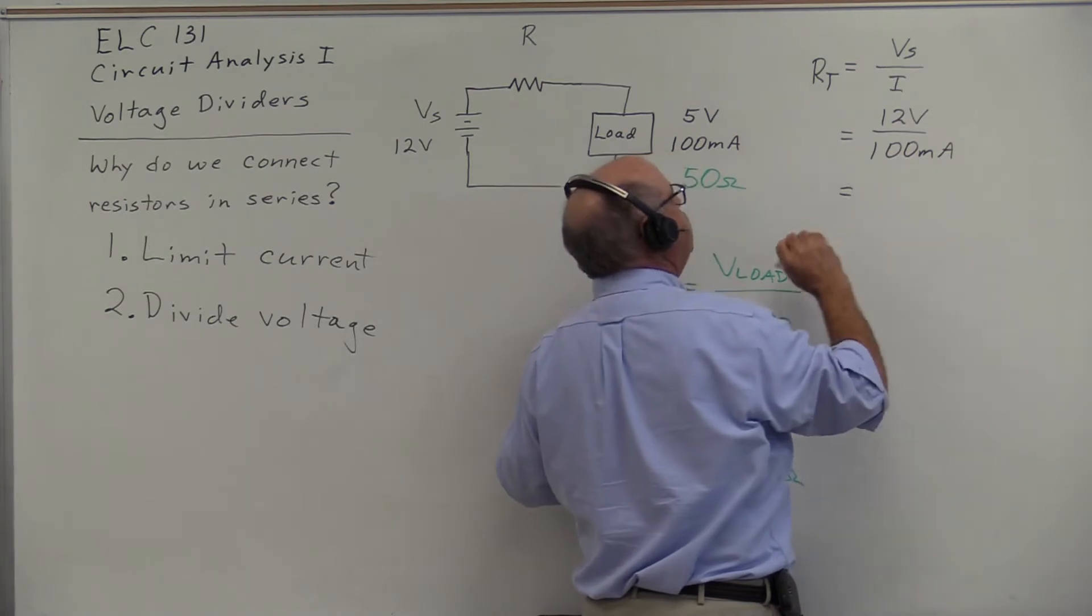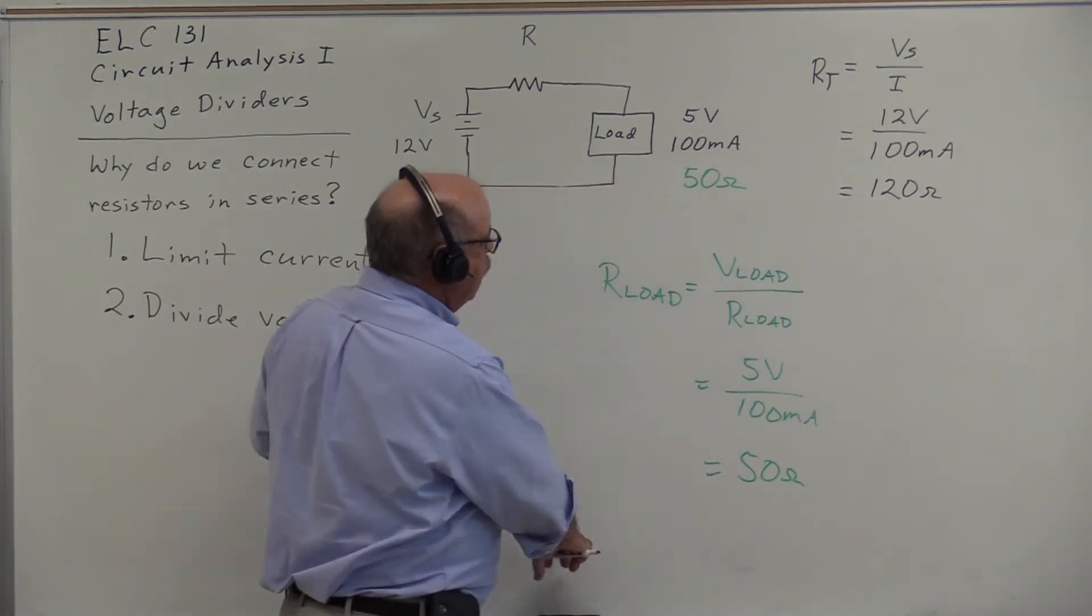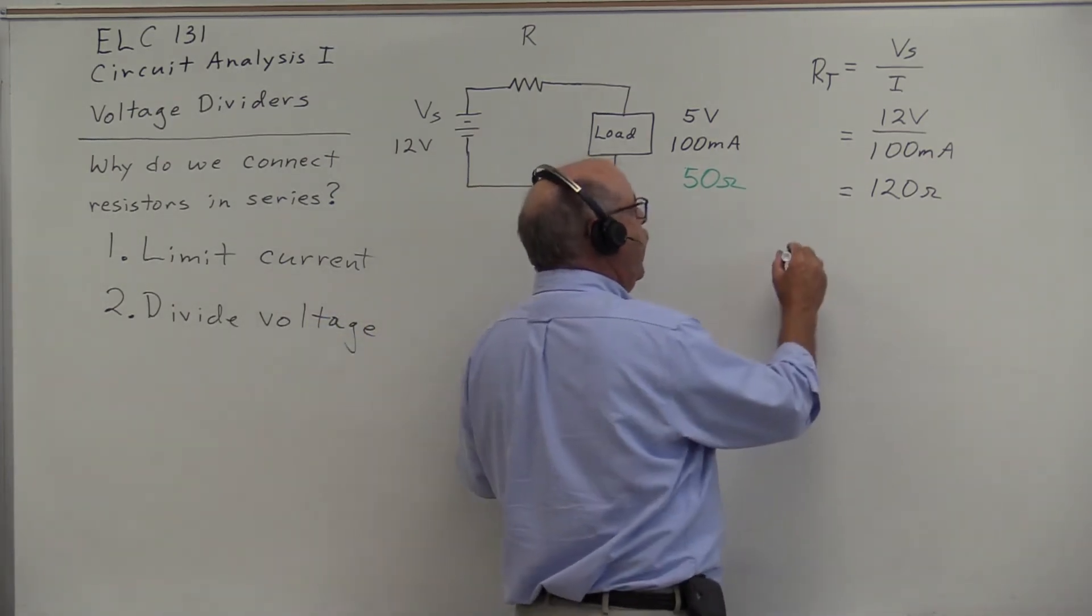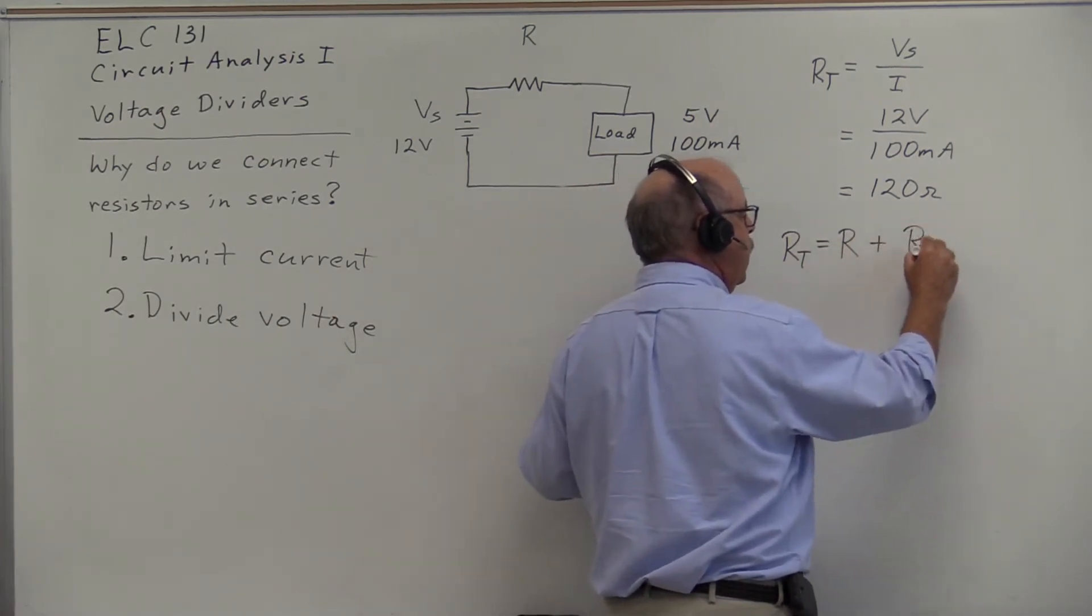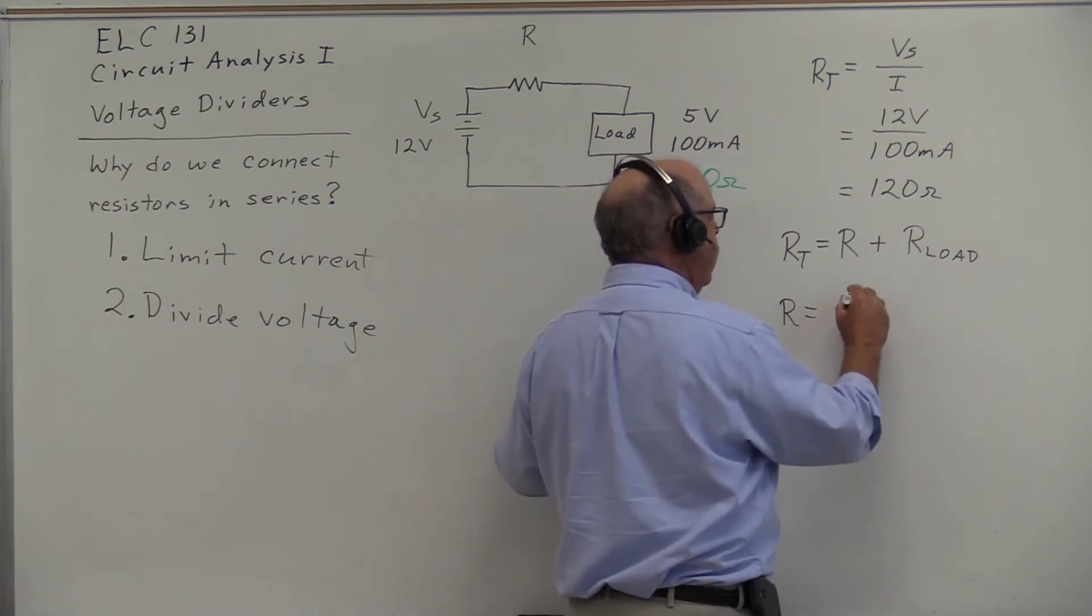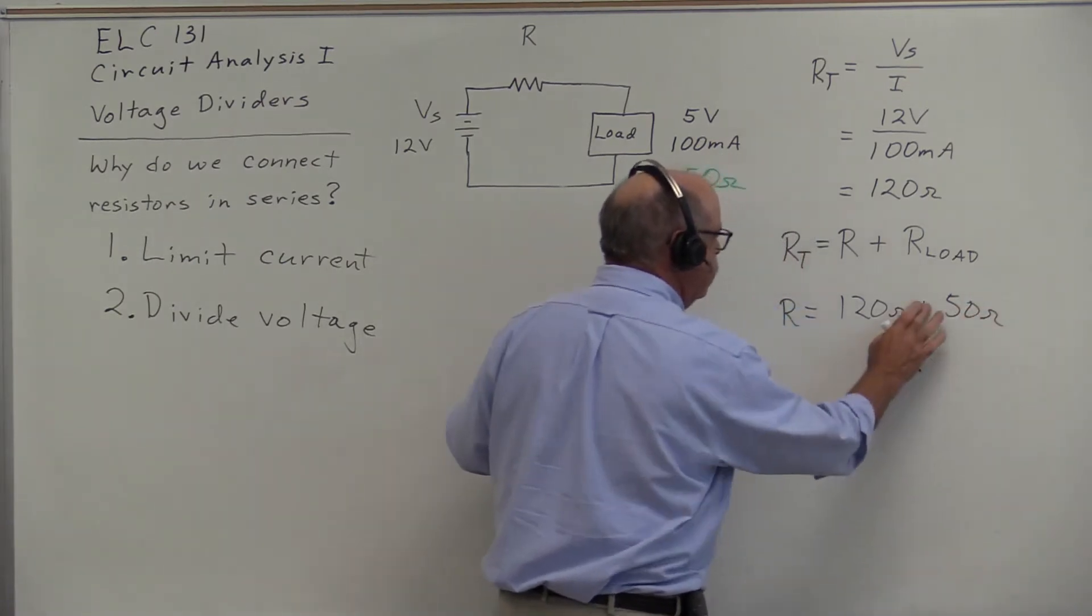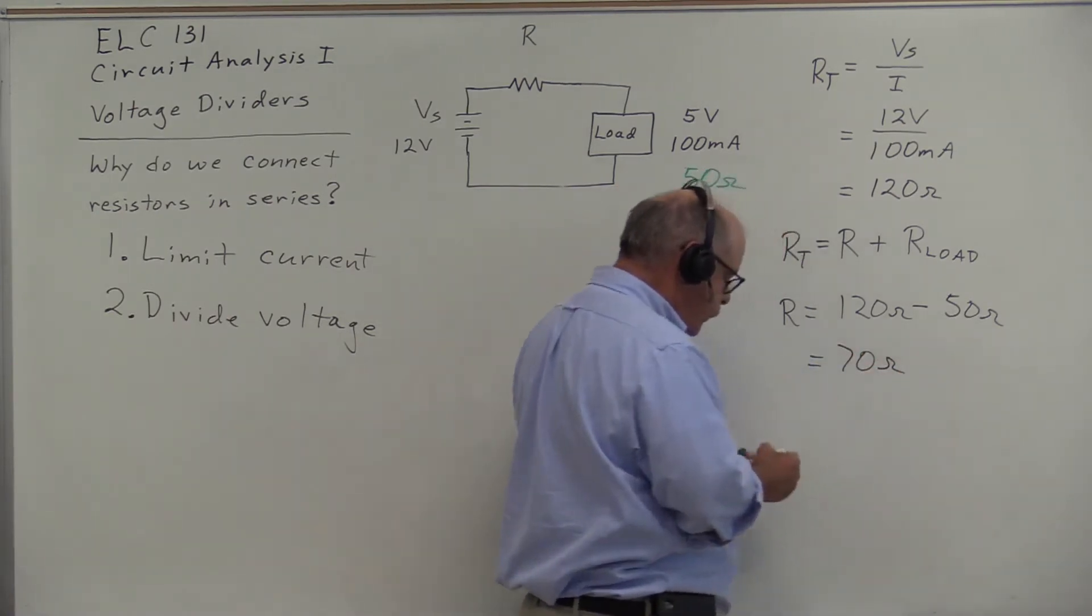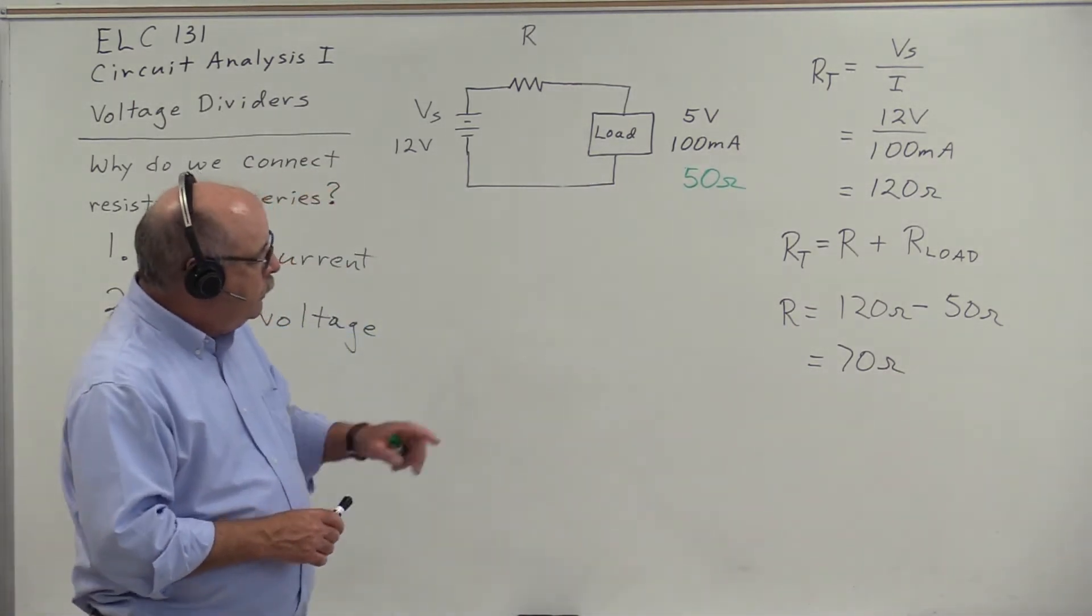We need a total resistance of 120 ohms. To limit the current to 100 milliamps, we know the total resistance equals R plus R_load, and the total resistance is 120 ohms. The load resistance is 50 ohms, so the value of resistance required is 70 ohms.